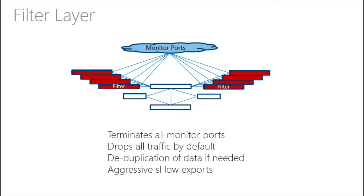The filter layer is the first layer — it's just the aggregation for the optical ports. We will drop all the traffic by default. We are not monitoring all the time; we are only monitoring when there are problems and when we need to troubleshoot. So we don't have any monitoring going on all the time.